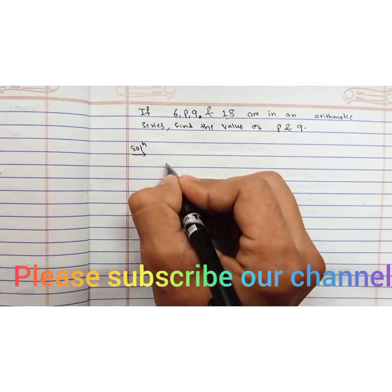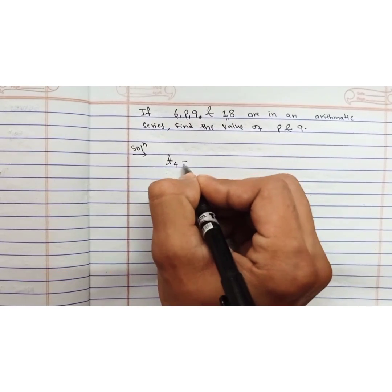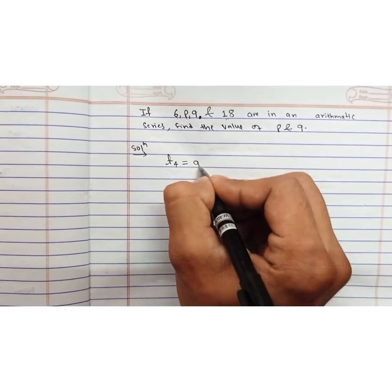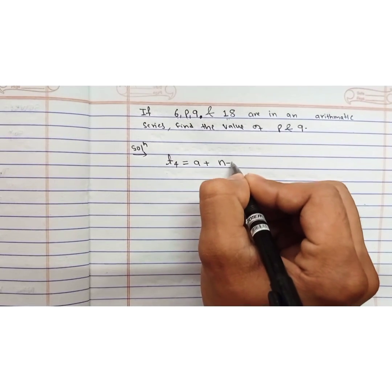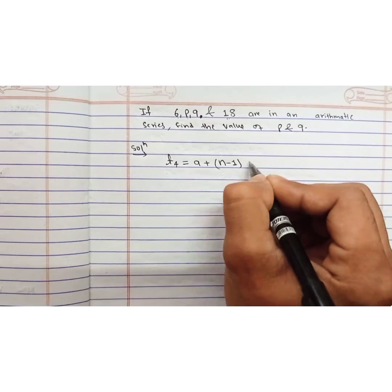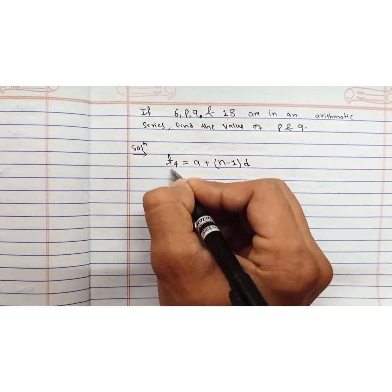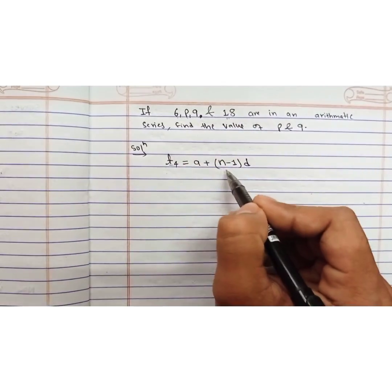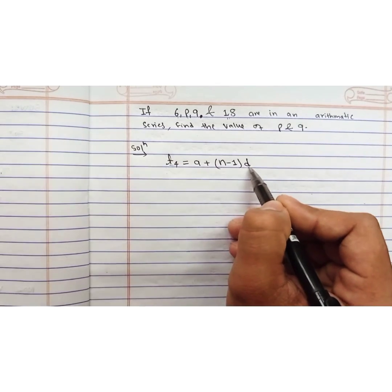If you apply the formula for the fourth term, t₄ equals a plus (n minus 1) times d, where t₄ is the fourth term, a is the first term, n is the number of terms, and d is the common difference.